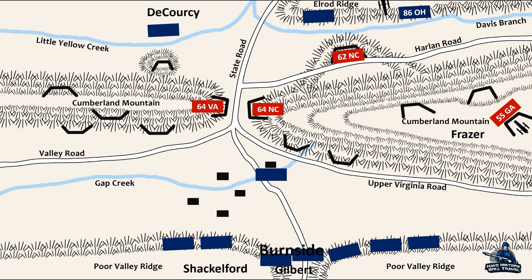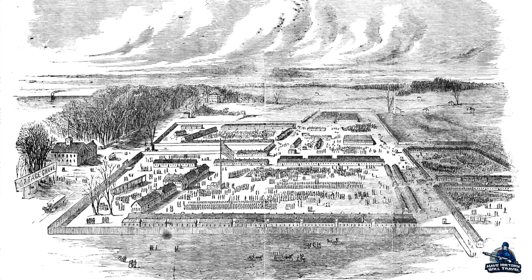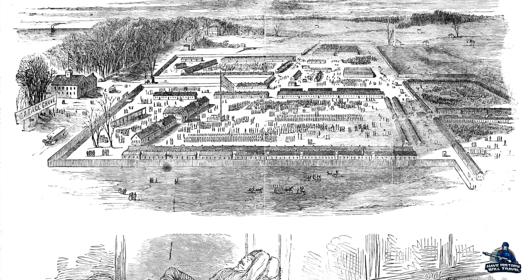When Burnside arrived with Gilbert's brigade and personally asked for Frazier's surrender, the Confederate commander gave in, knowing that with Knoxville captured, his command stood no chance of survival, and he thought it best to prevent any senseless bloodshed. At 3 p.m. on September 9, 1863, the Gap's garrison formally surrendered. The regiments lined up on the Harlan Road, handed over their ammunition and weapons, and stayed there until the next morning, when the captured rebels began their march to Crab Orchard, Kentucky, where they would board a train destined for Chicago and the Camp Douglas prisoner of war camp.